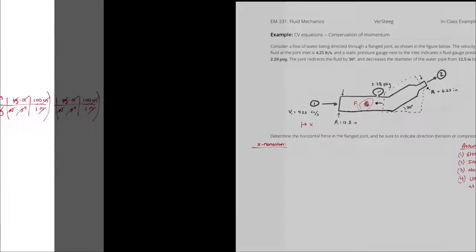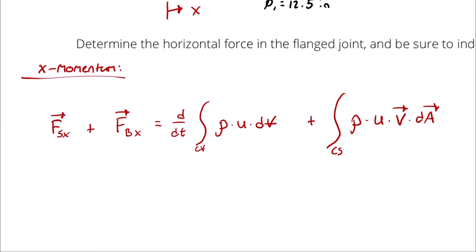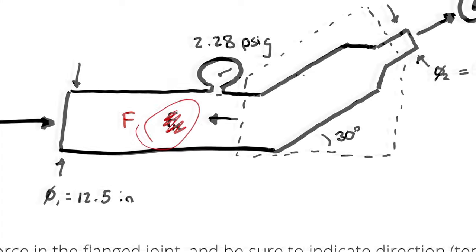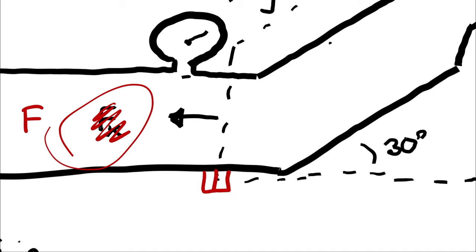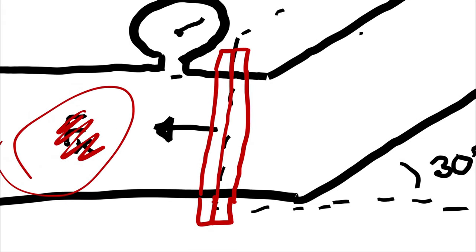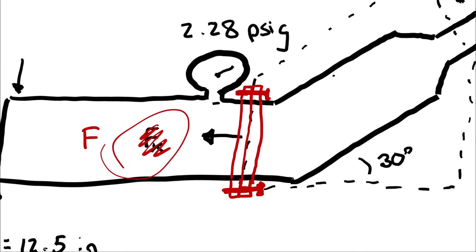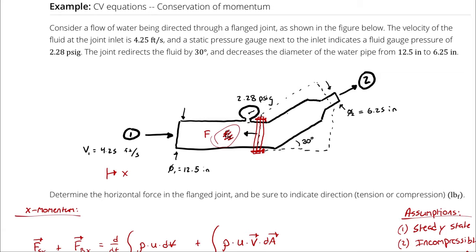Now I'll start the x-momentum equation. First question: do we have any surface forces? Yes — there's a force acting on the surface in the form of the forces acting on this joint. Think of it as bolted together: each pipe has a flange on the end with a fastener connecting them. The problem is asking how much force is required to hold that joint in place — that force F we are solving for is the force at the flange, either in the left or right direction.